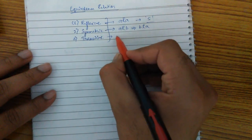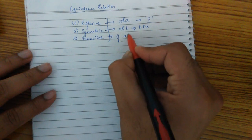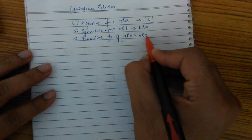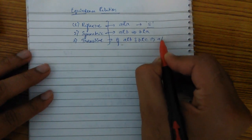And what is transitive? If A relates to B and B relates to C, that implies A relates to C.